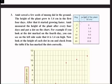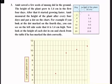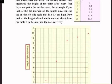Question number three: Amit sowed a few seeds of moong dal in the ground. The height of the plant grew to 1.4 centimeters in the first four days. After that it started growing faster. Amit measured the height of the plant after every four days and put a dot on the chart. For example, the dot on the fourth day shows on the left side scale that it is 1.4 centimeters high. Now we will check the dots.